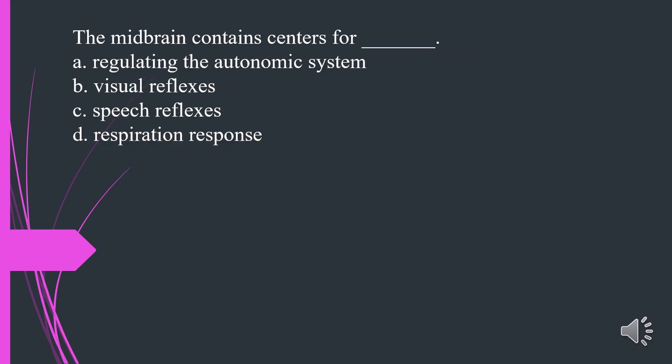The midbrain contains centers for what? A. Regulating the autonomic system. B. Visual reflexes. C. Speech reflexes. D. Respiration response. The answer is B. Visual reflexes.